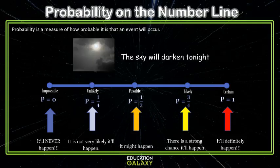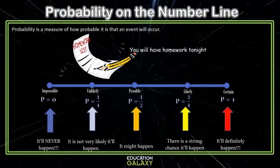The sky will darken tonight. That's certain. Of course it will darken. You will have homework tonight. Unfortunately, that's pretty likely. So that would be somewhere between a half and one. So we put it right in the middle. Three fourths.